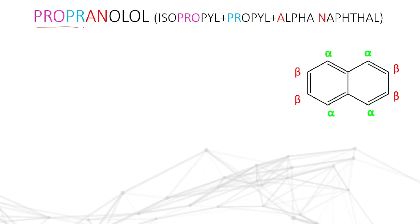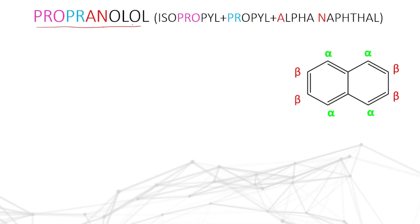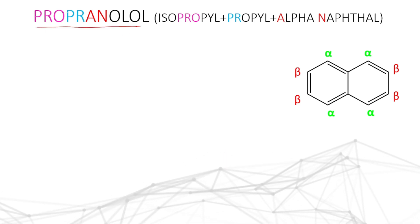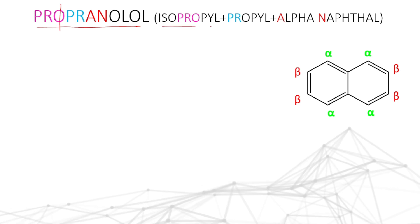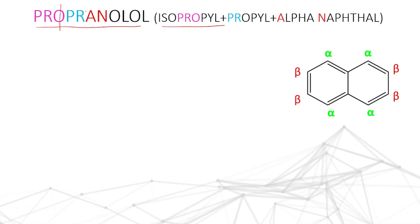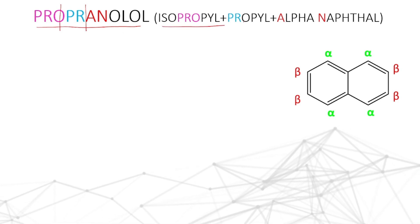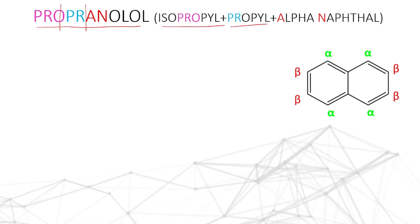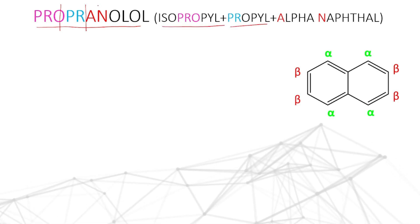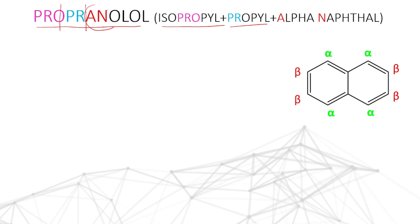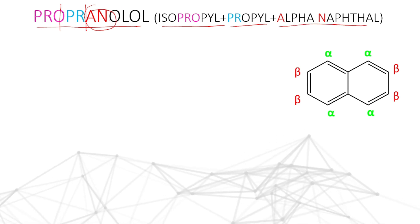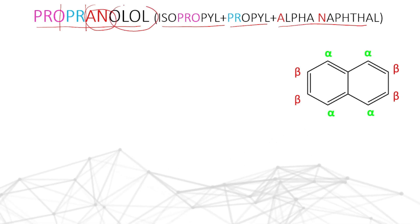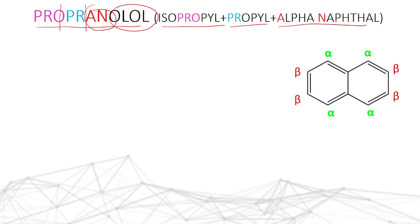The next one is propranolol. In propranolol, an isopropyl group is there. Another propyl group is there — a normal propyl group. Alpha naphthyl (AN) is there. Along with OL, meaning two alcohol groups are there.